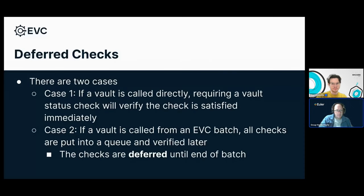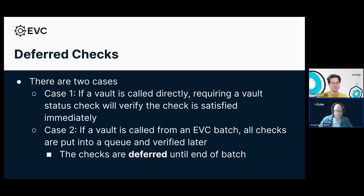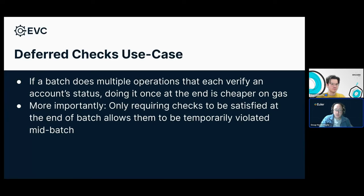Deferred checks — solidifying what I was talking about earlier. The EVC is the one who decides when the check is actually validated. Vaults request the checks and then the EVC will either check them right now — when nothing's deferred — or check them later. There are two ways to interact with a vault: either you interact with the vault directly, not inside a batch, in which case the EVC will call back into the vault right away to verify. Or case number two is when it's in a batch and those checks have been deferred — they will be done at the very end. There are many use cases for deferred checks.